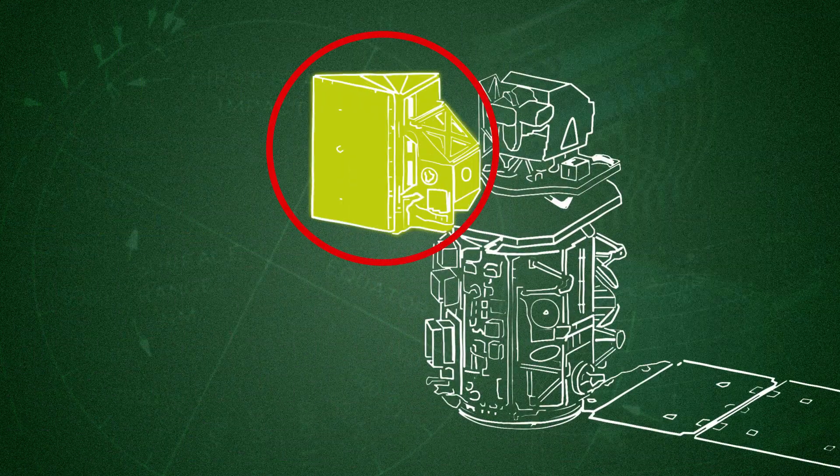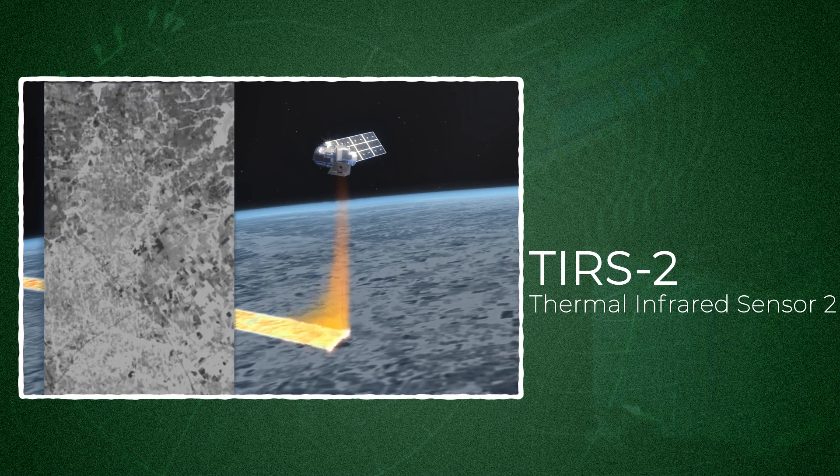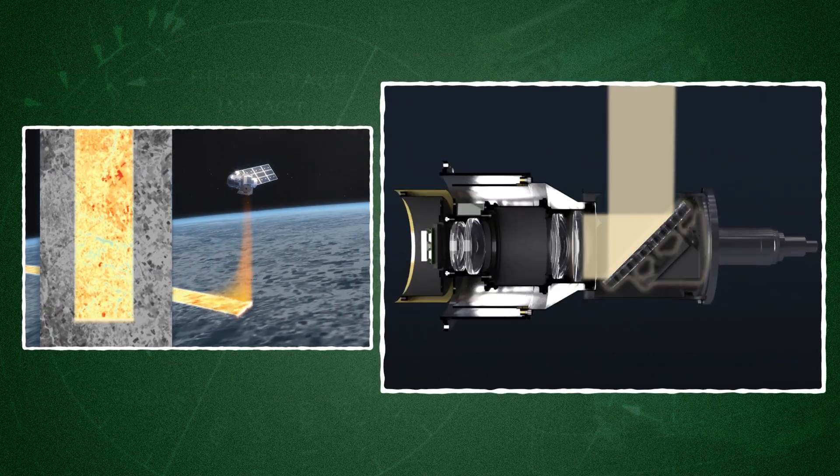The second instrument aboard Landsat 9, called TIERS-2, collects thermal infrared wavelengths, or temperature signatures emitted by the Earth itself.